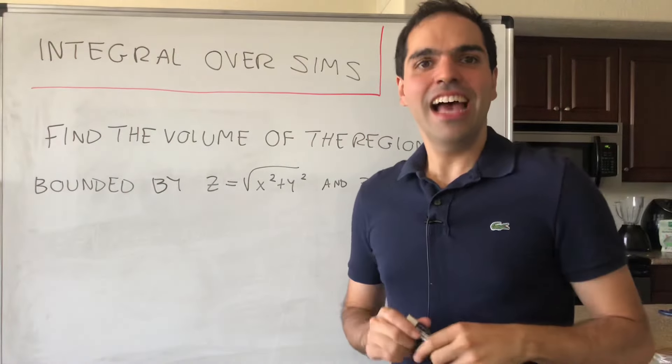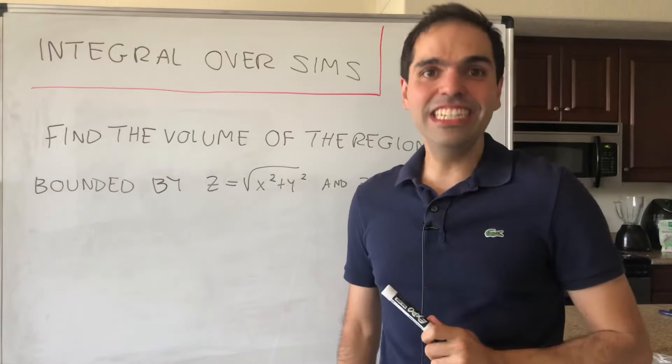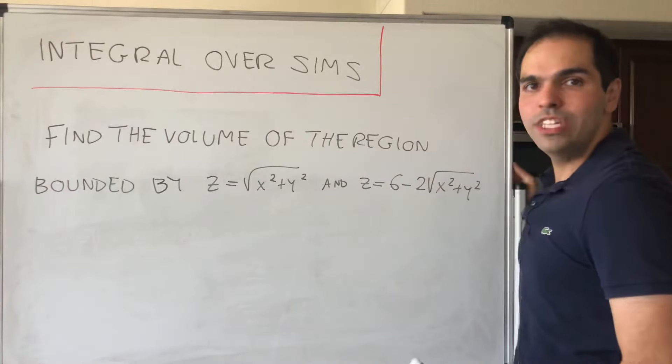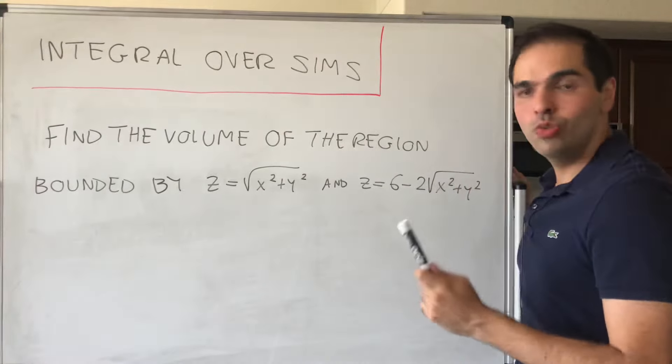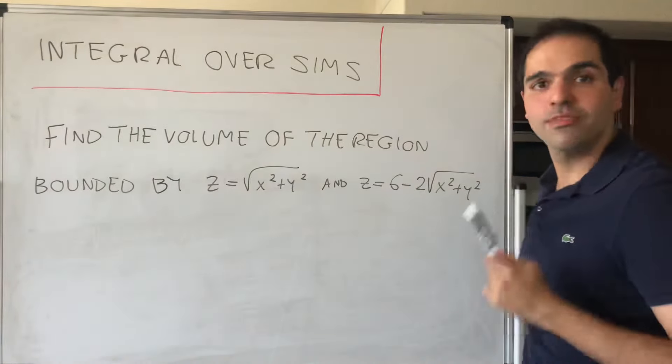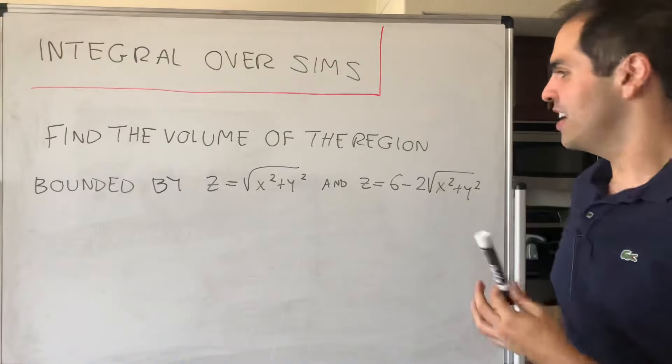Alright, thanks for watching. We'll do yet another neat integration problem. Namely, let's find the volume of the region bounded by the following two cones: z equals square root of x squared plus y squared, and z equals 6 minus 2 square root of x squared plus y squared.